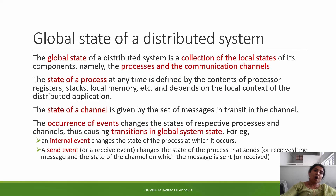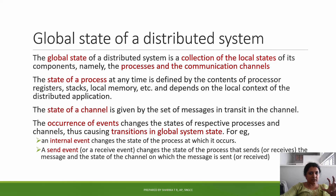Next is the global state of a distributed system. A global state of a distributed system consists of a local state, a communication network, and a collection. The state of a process includes its register, stack, local memory, and local context.